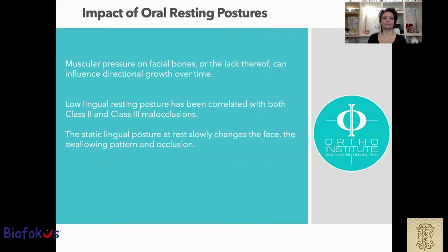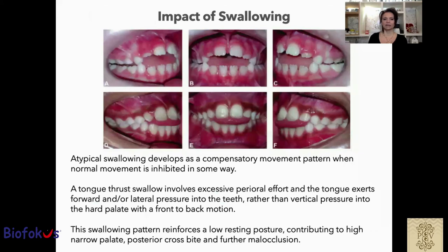Impact of oral resting posture: muscular pressure on facial bone — or the lack of the tongue positioned at the roof of the mouth — can influence directional growth over time. A low lingual resting posture was correlated with both class 2 and class 3 malocclusion. The static lingual posture at rest slowly changes the face, swallowing pattern, and occlusion. An atypical swallow develops as a compensatory movement pattern when normal movement is inhibited. A tongue thrust swallow involves excessive perioral effort, with the tongue exerting forward or lateral pressure into the space rather than vertical pressure into the hard palate with a front-to-back motion. This swallowing pattern reinforces a low resting posture, contributing to a high narrow palate, posterior crossbite, and further malocclusion.